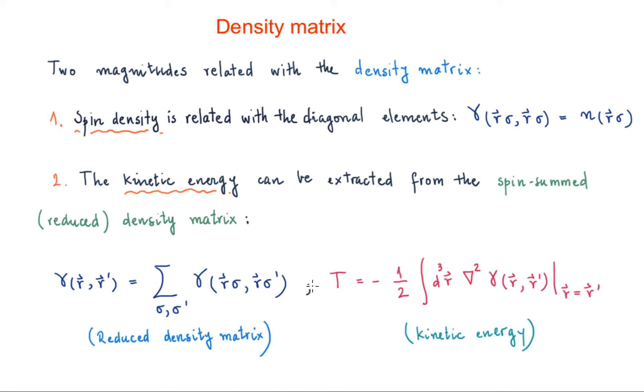It's quite straightforward to see that the kinetic energy can be obtained in this way from this reduced density matrix. It's minus one-half the integral over r and the whole volume, the Laplacian of the reduced density matrix, calculated at r equal r prime.